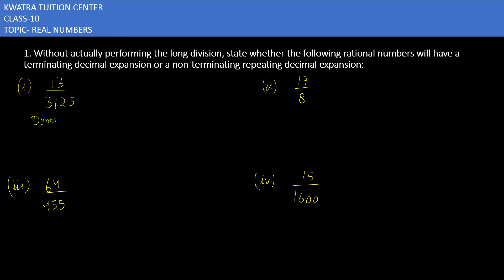What is the denominator? 3, 1, 2, 5. We will factorize it. Factorize means what is the prime factors. So we know that 3125 is divisible with 5, so it will give you 625.